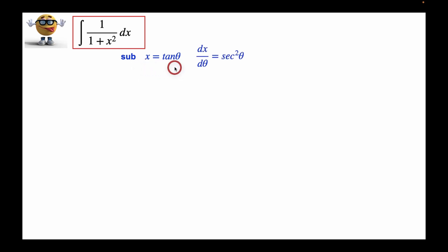So the derivative of x, which is the derivative of tan theta, is secant squared theta. Now it just is, but if you want to know how it just is, I have a video step-by-step on this derivative, so check that out if you like.